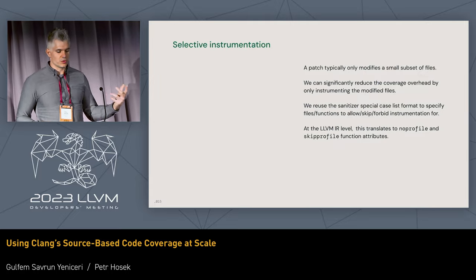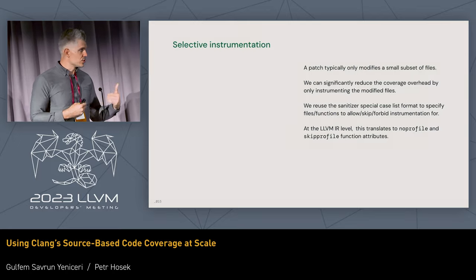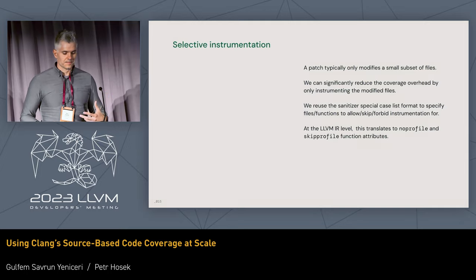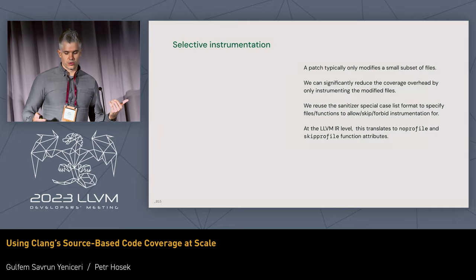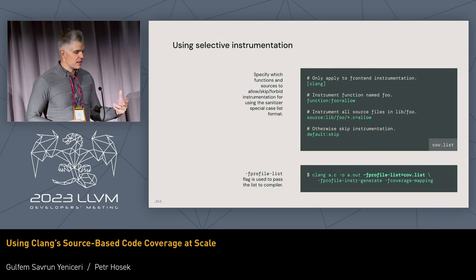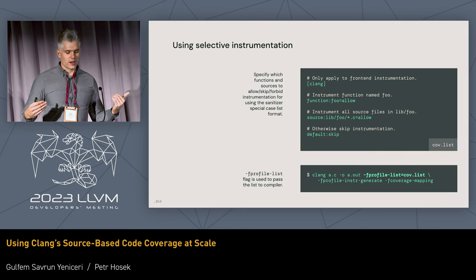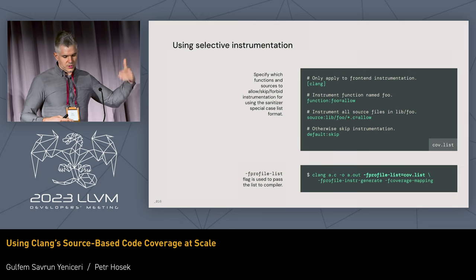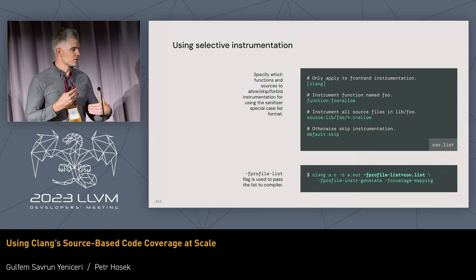To reduce this overhead, we introduced new attributes at the LLVM IR level that can be placed on functions to tell the backend to avoid instrumenting them: `no_profile` and `skip_profile`. We also introduced a new way to tell the compiler to avoid instrumenting certain files or functions by reusing the existing Sanitizer Special Case List format. You can write such a file, feed it into Clang, and Clang will use it to determine which portions of your source files to instrument or not.